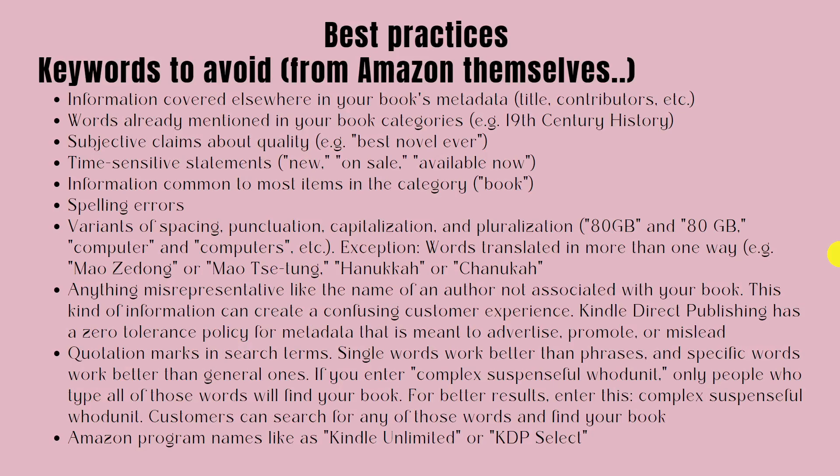Words already mentioned in the book categories — so if you've chosen the right categories, you don't need to use those keywords again. Subjective claims like 'best novel ever' or 'best book ever.' Time-sensitive statements like 'new,' 'on sale,' 'available now.' Information common on most items in that category — so you don't need to use the word 'book,' though it's very hard not to when you're thinking of phrases and trying not to use 'book,' 'journal,' or 'notebook.' Spelling errors — that's an obvious one. Variants of spacing, punctuation, capitalization, and pluralization. Amazon understands all of this — it's very sophisticated, so you don't need to waste space trying to put words spelt slightly different.